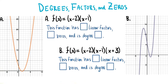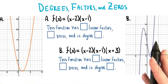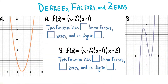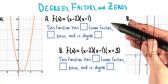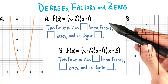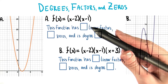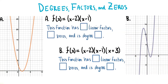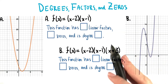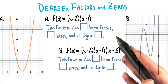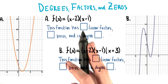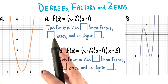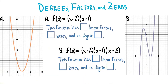Here are two functions and the graphs that go along with each of them. For each of these graphs, I'd like you to fill in the proper numbers to complete the sentence that goes along with it. In other words, please tell me for each one how many linear factors and how many zeros it has, and what degree it is.